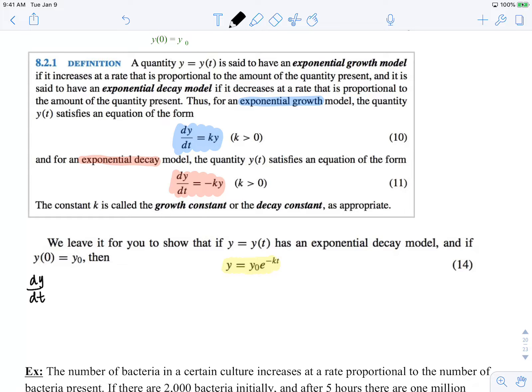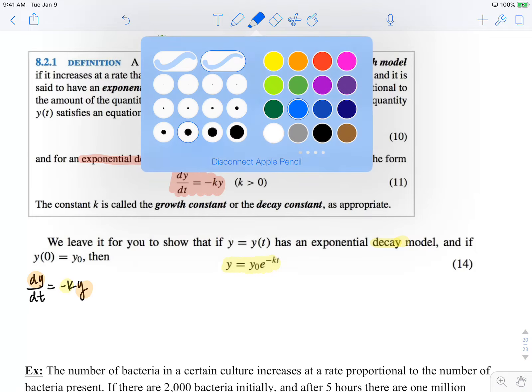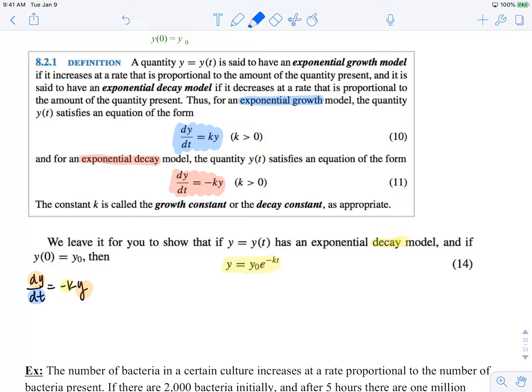dy/dt, the rate of change of the quantity, is proportional to the quantity. Now notice, I'm only using a negative k because they wanted it to represent exponential decay. So to solve this differential equation, I need to use separation of variables. We have variables in terms of y and variables in terms of t. Separating these variables,